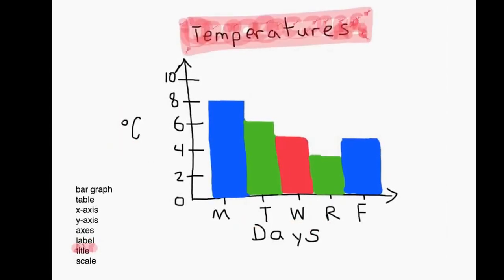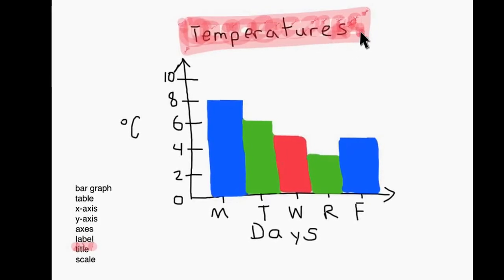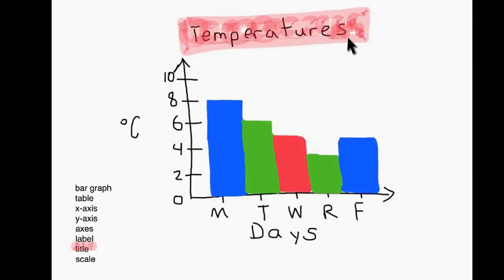Looking at our title — we have to give it a title. Just like a book or a table has a title, we do the same for the bar graph. We say this is "Temperatures," or we could say "Temperatures Last Week" if you want to give more information. The title is very important — make sure you always include it up top above the bar graph.